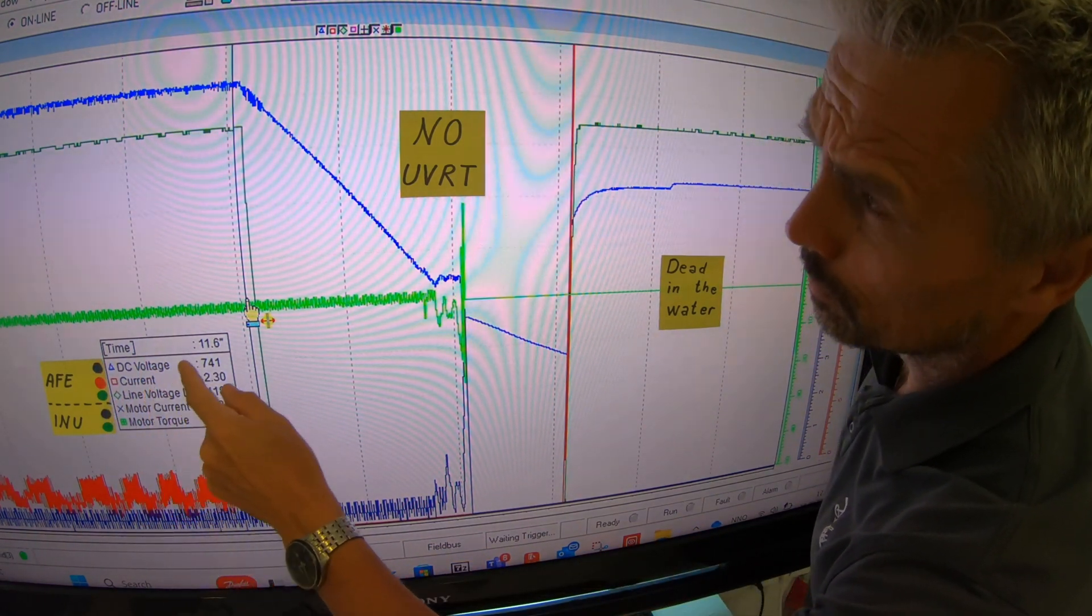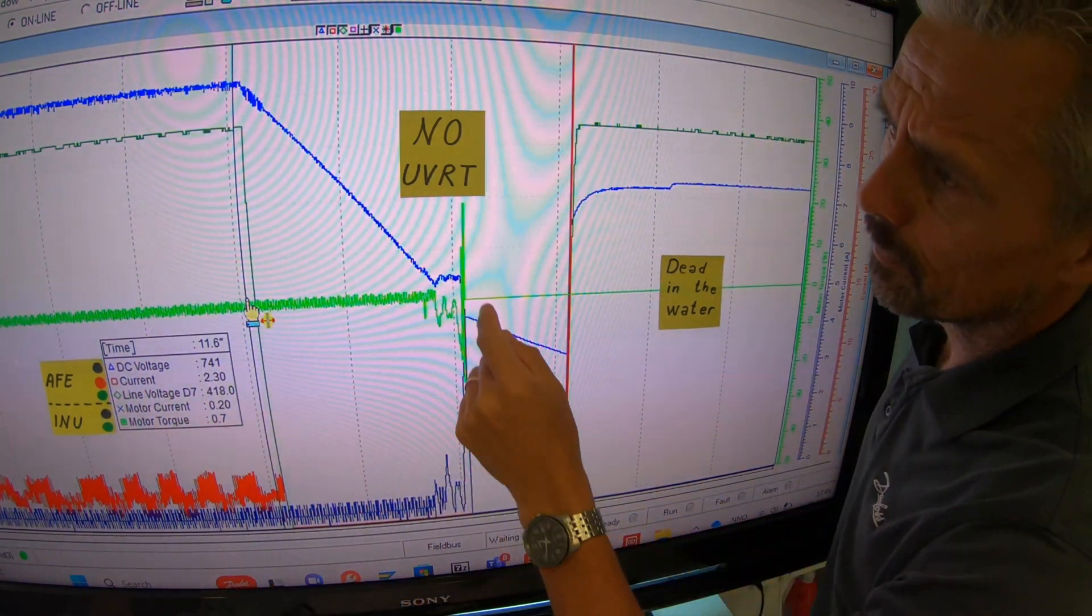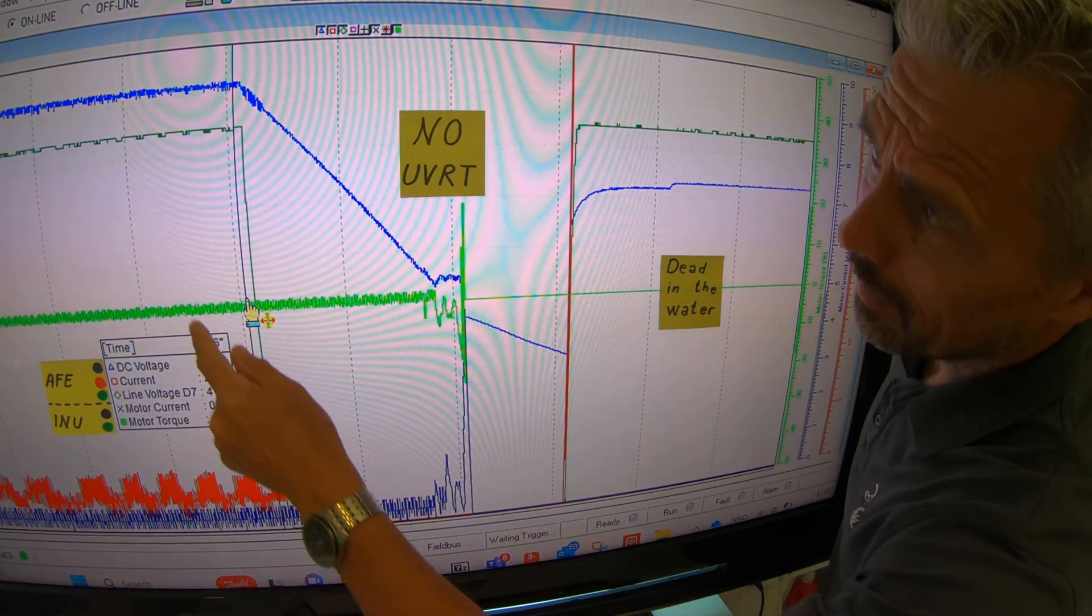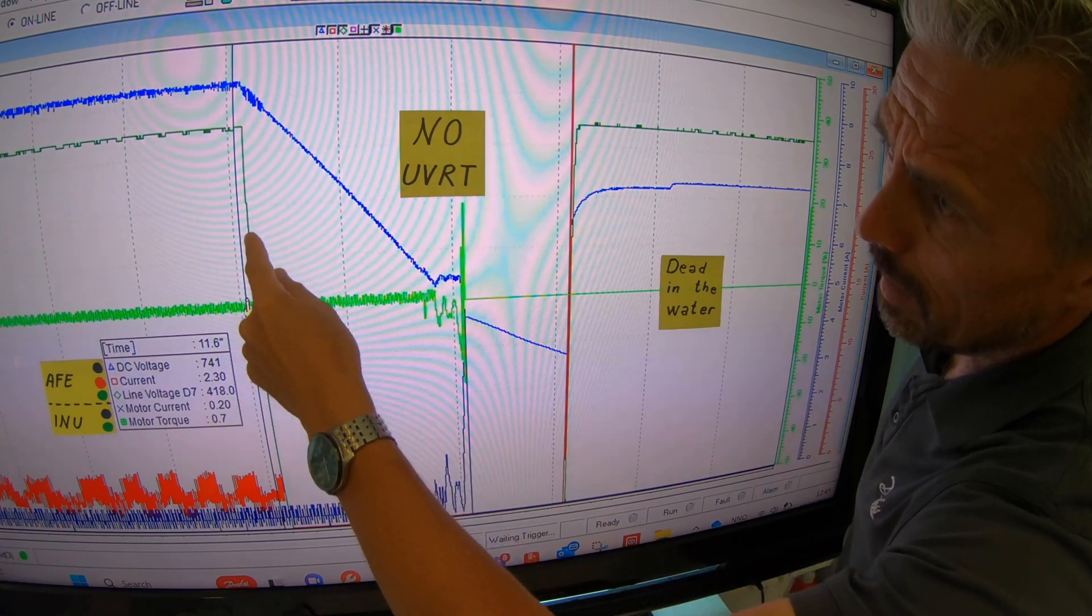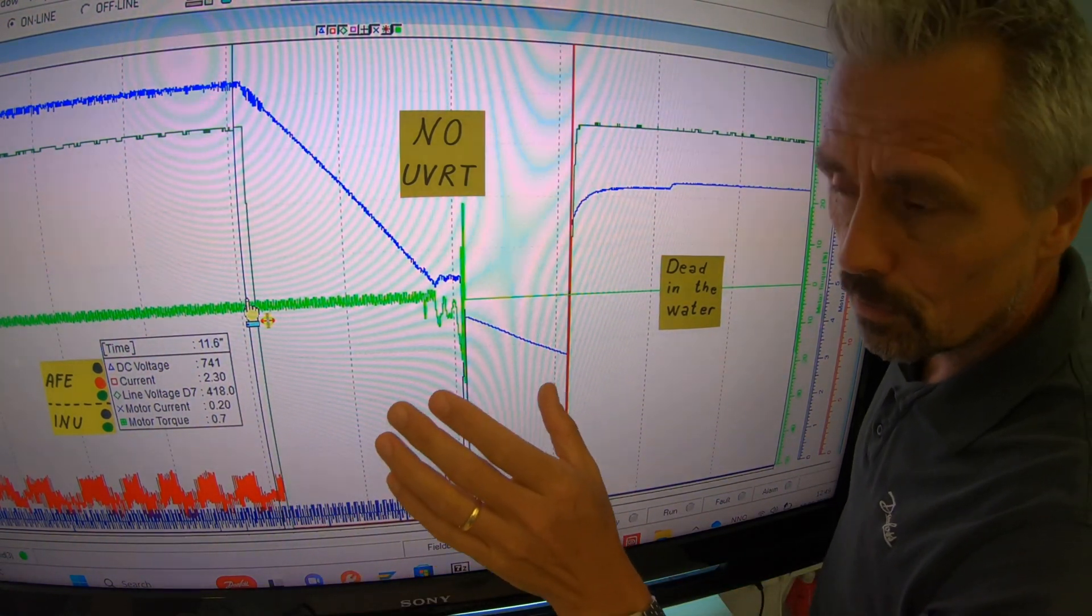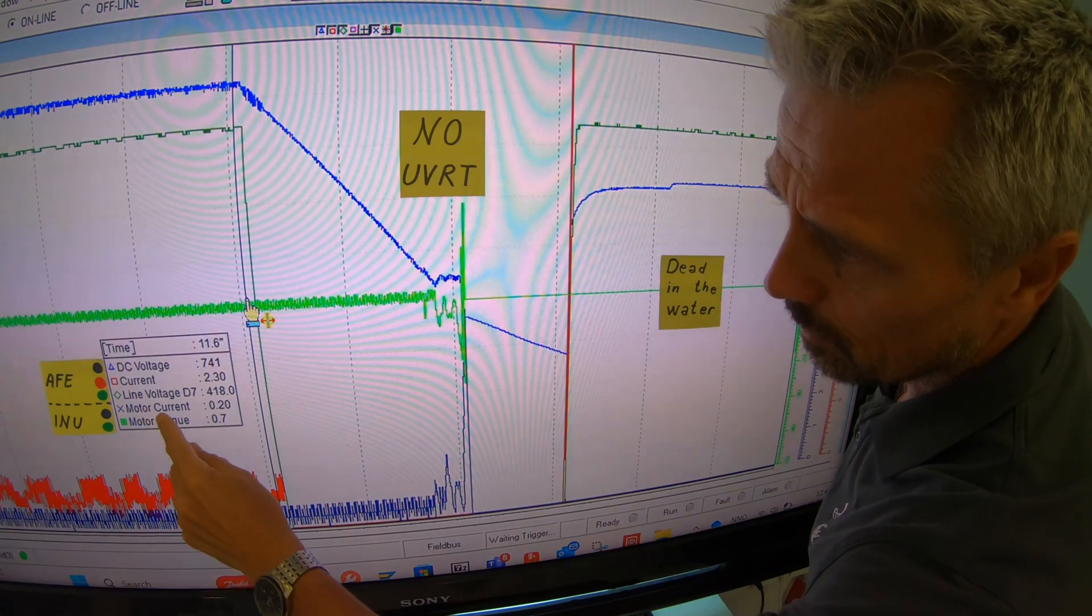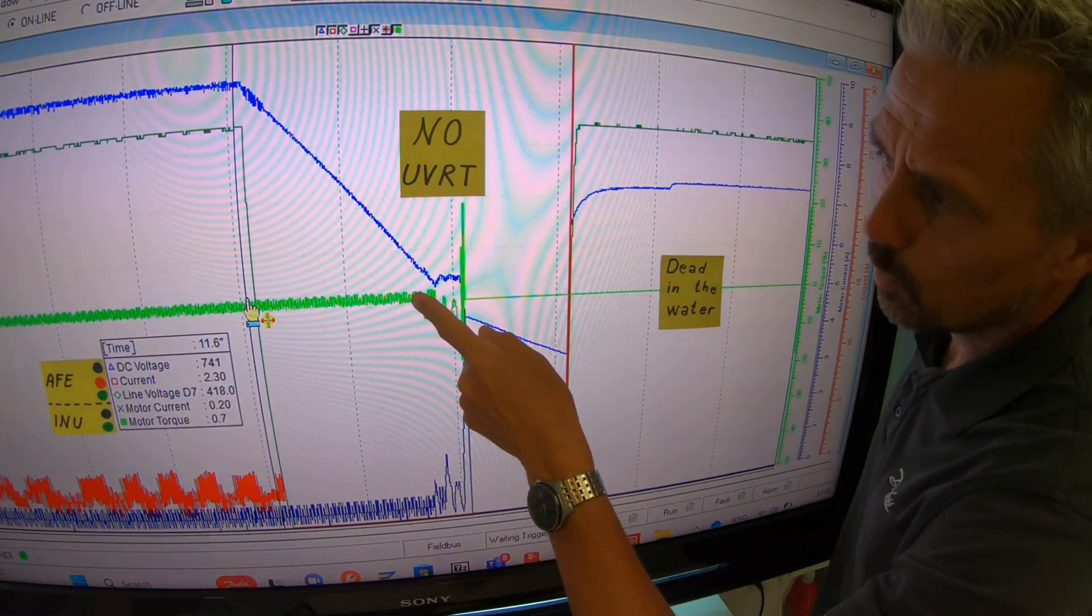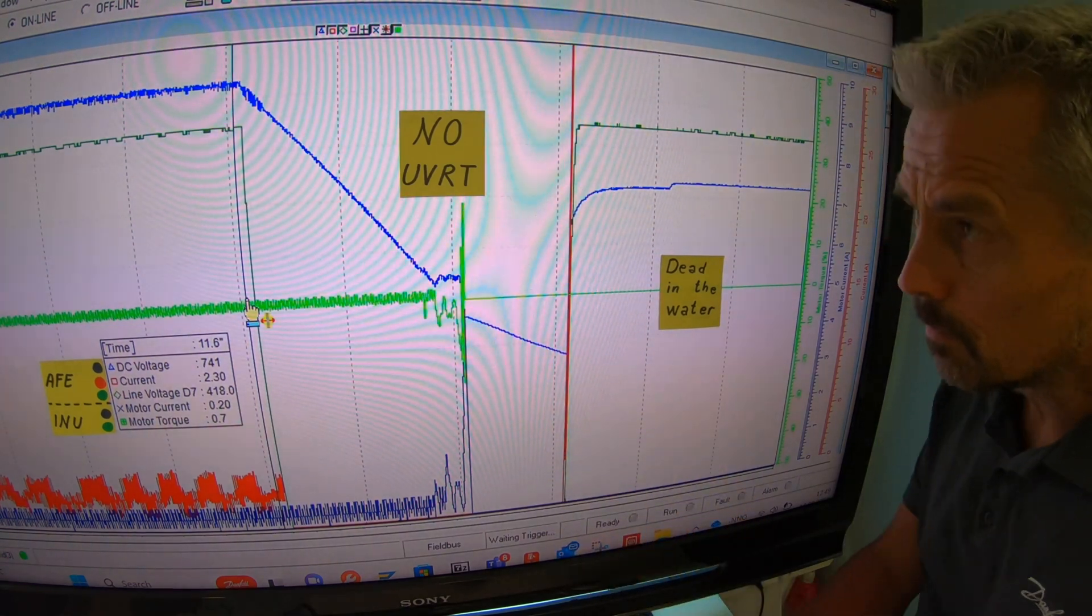The active frontend is shown here, the DC voltage. The current for the active frontend is the red one. And here the green curve is the AC voltage on the ship grid. The consumer, the motor, the current is the blue one here and the green curve is the motor torque. So let's see what happens when the ship grid voltage drops.